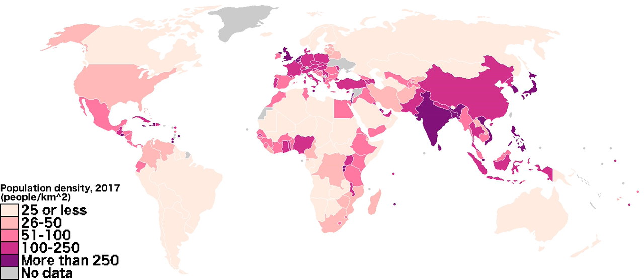This is a list of countries and dependent territories ranked by population density, measured by the number of human inhabitants per square kilometer. The list includes sovereign states and self-governing dependent territories based upon the ISO standard ISO 3166-1. The list also includes but does not rank unrecognized but de facto independent countries.